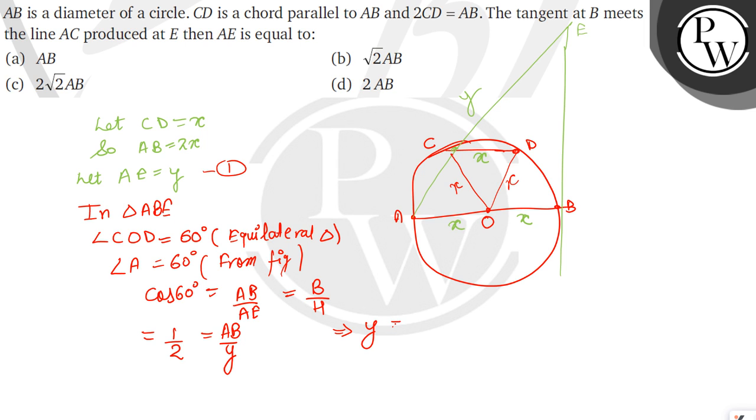Now by finding the value of Y, we can say that Y is equal to 2AB, which is our answer. So we can say that Y is equal to 2AB, which is our answer and the fourth option will be our answer. Hope you have understood this question. Best of luck!